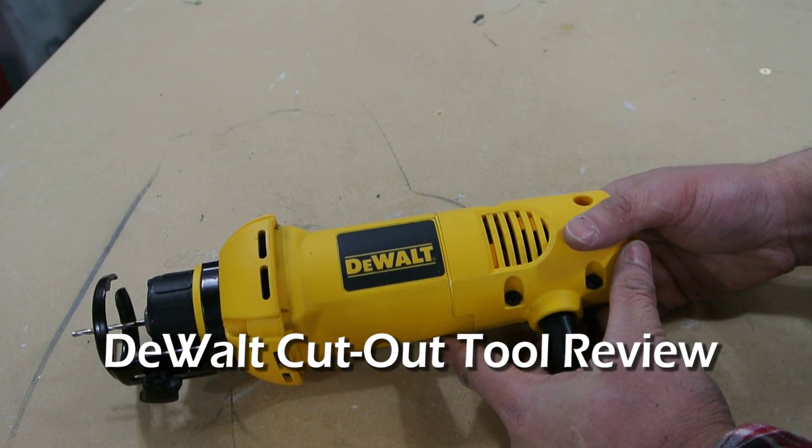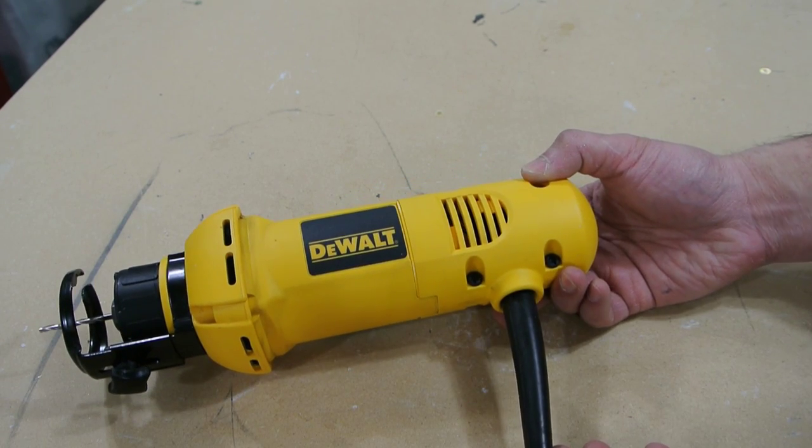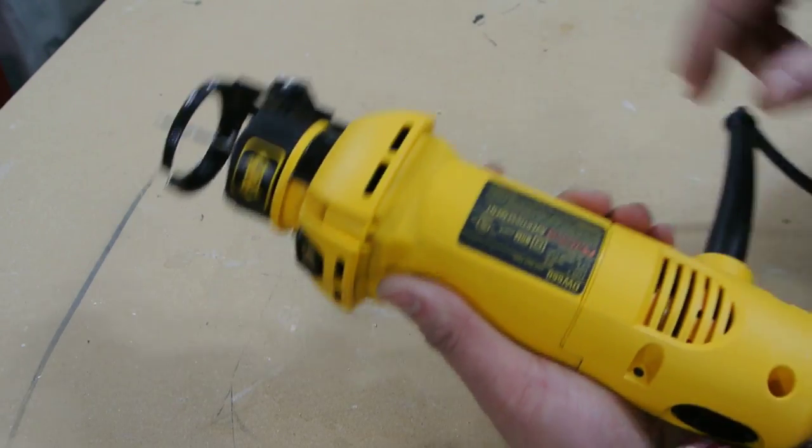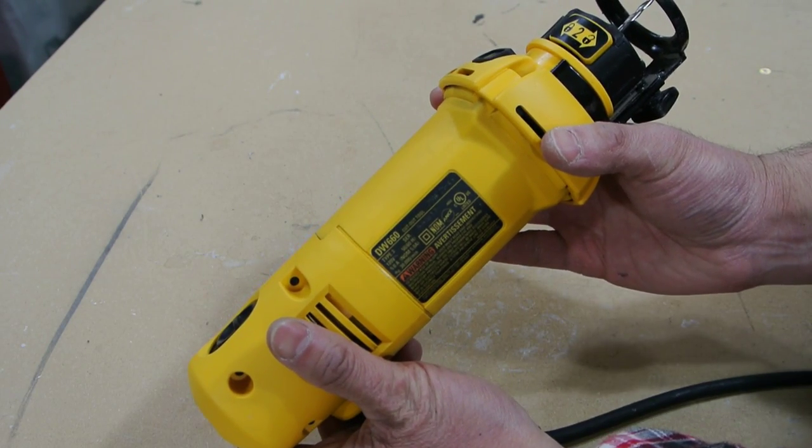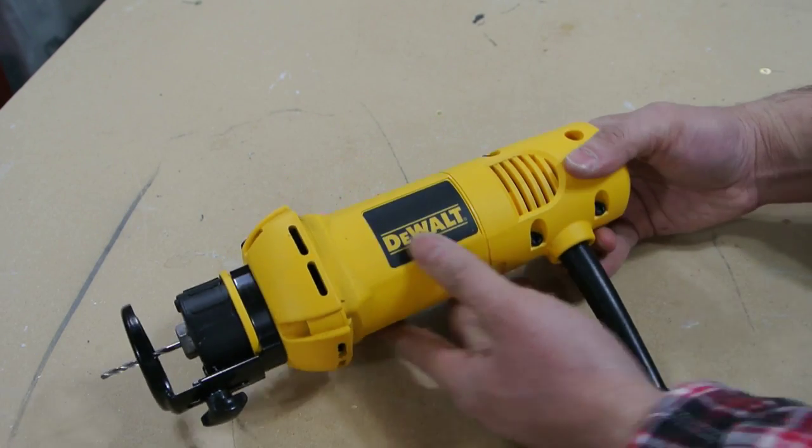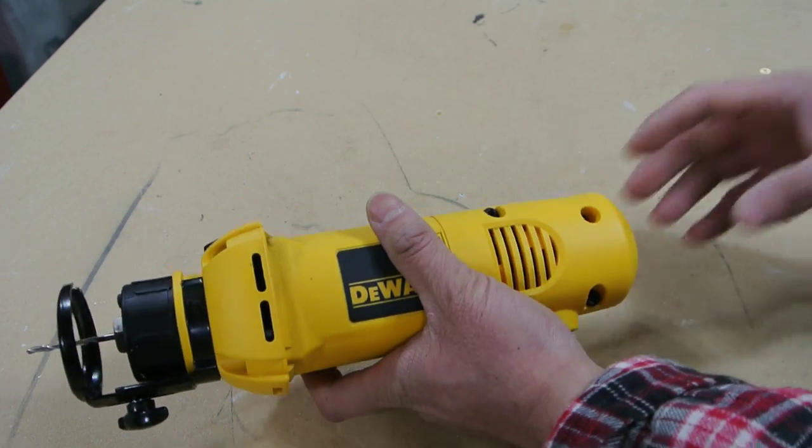This is an overview of the DeWalt cutout tool, the corded version. They also make a cordless one. This is the DeWalt DW660 for reference. It's a 5 amp tool. It's pretty Spartan.